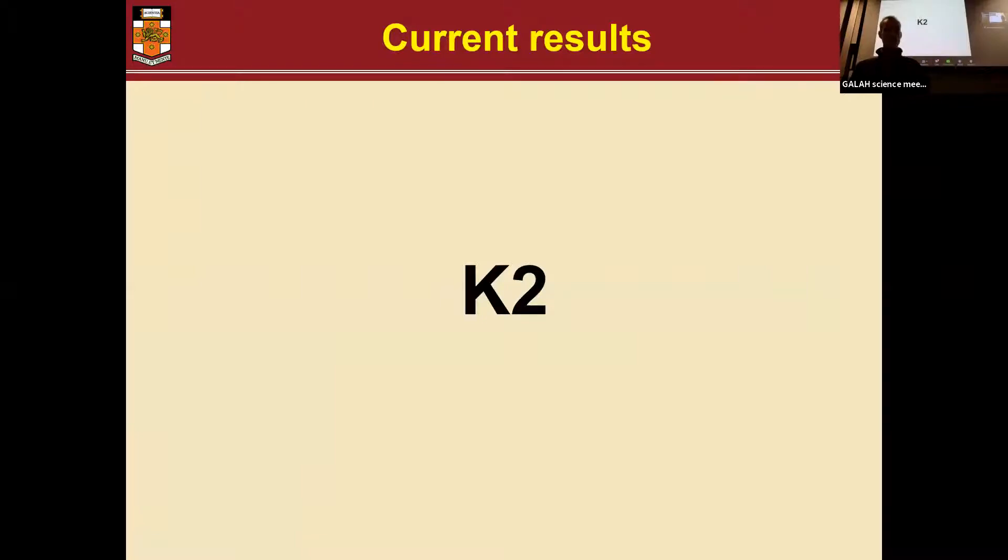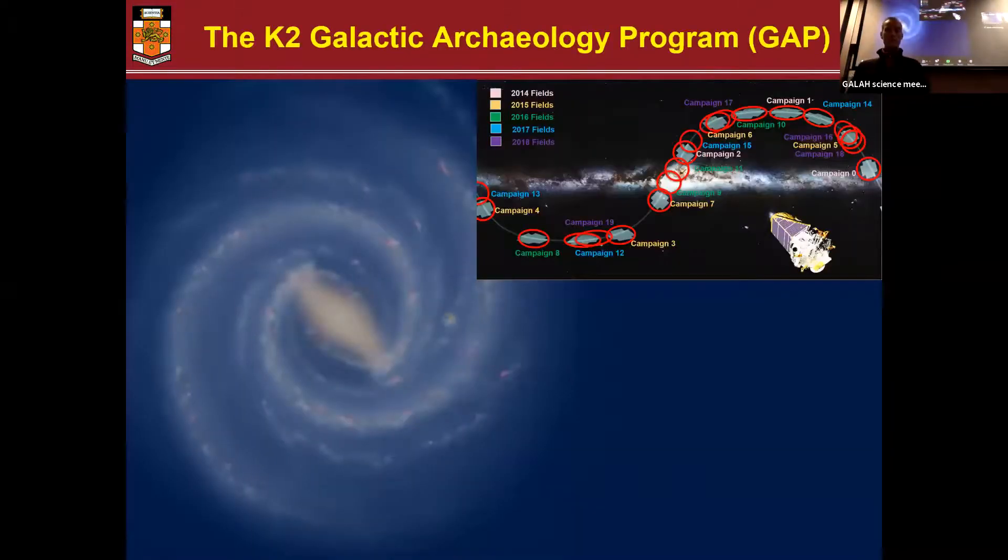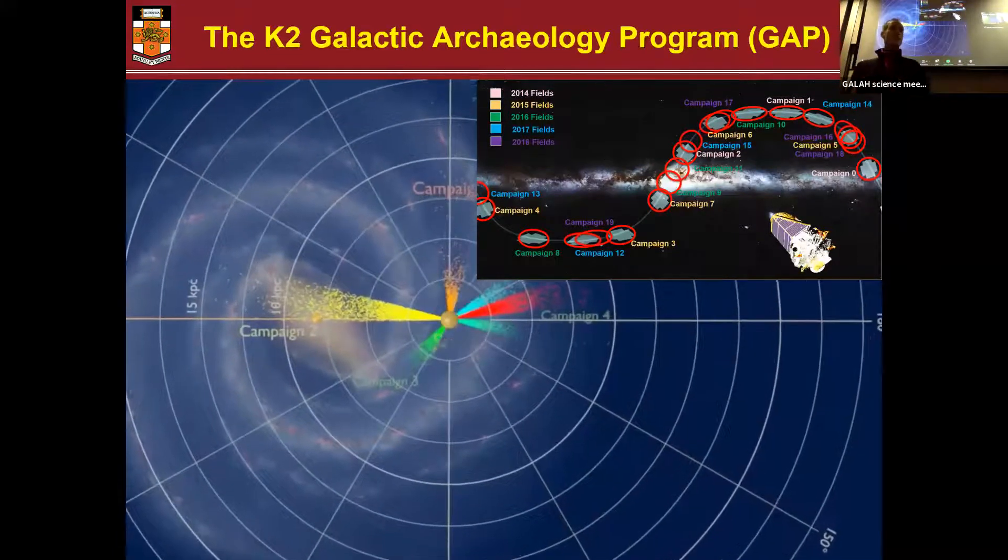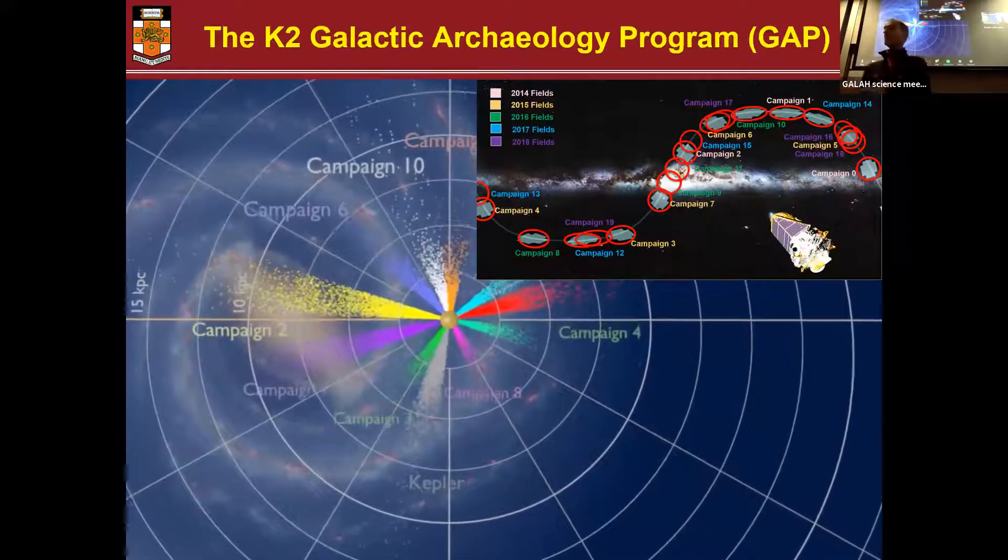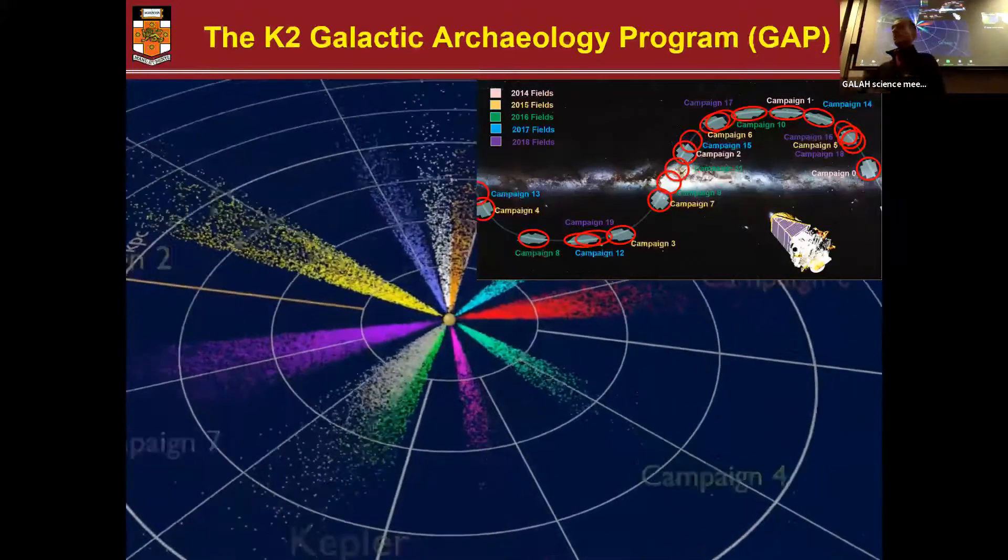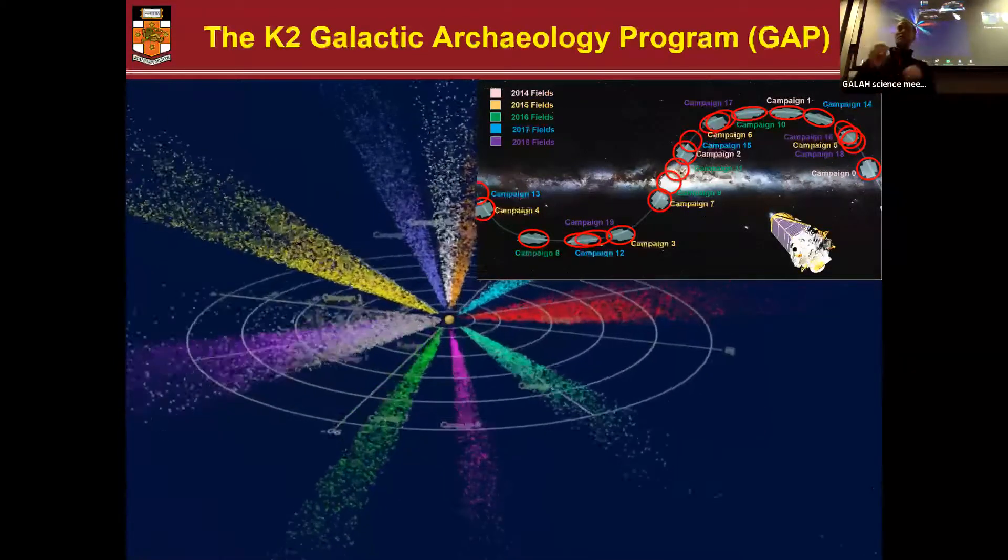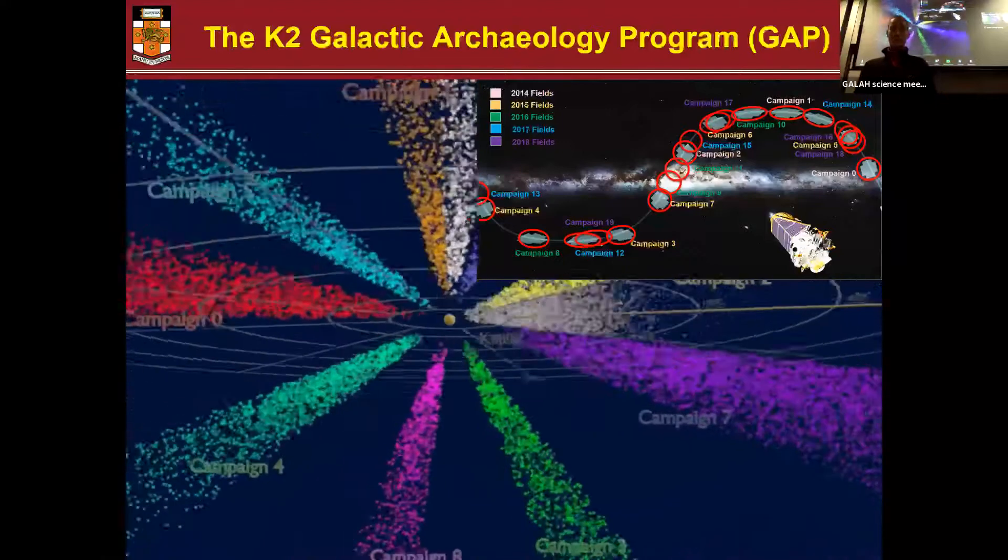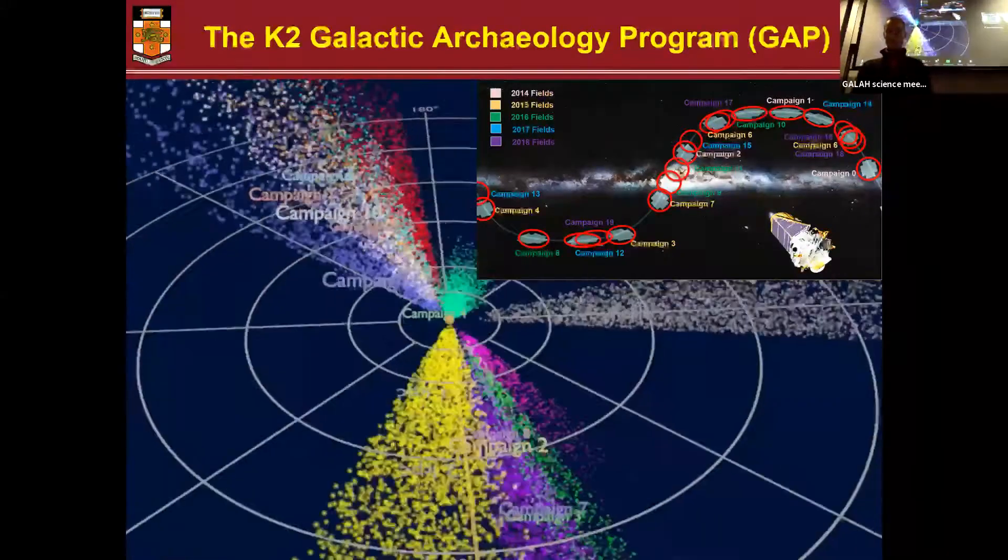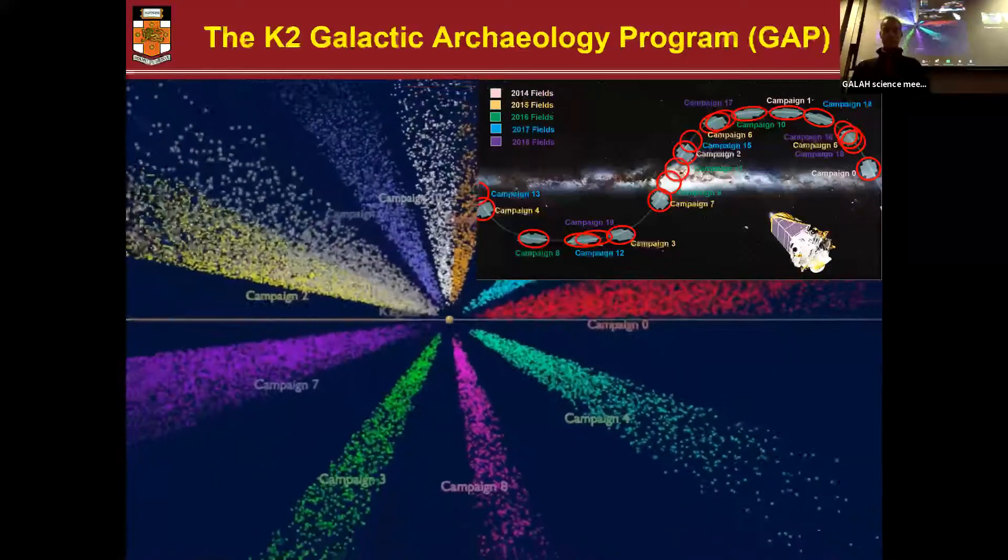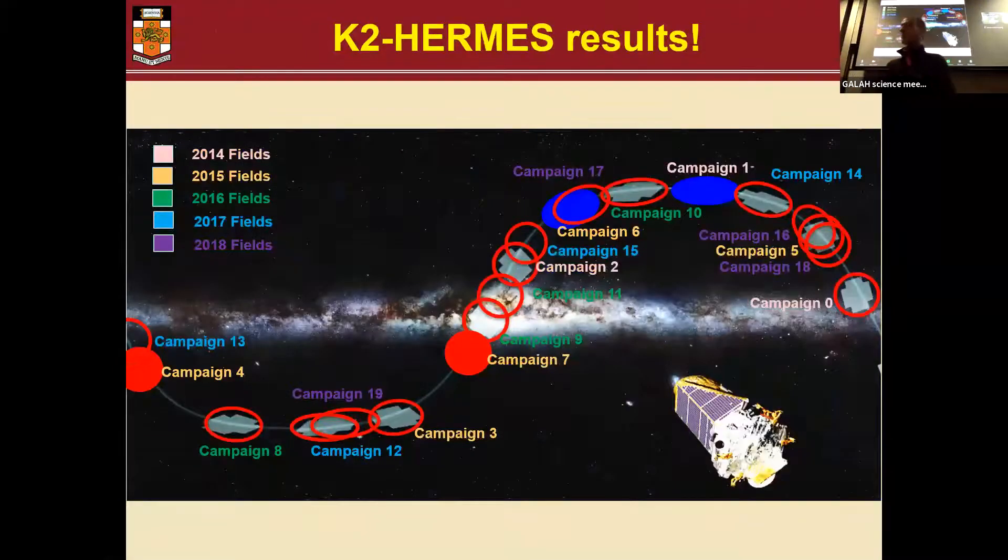K2 was the failed Kepler mission that became this new mission that looked along the ecliptic. And it gave us a beautiful opportunity to select stars with a very well-defined selection function that we could reproduce later on. Not only that, it enabled us to look at very different regions of the galaxy. So we could see whether the discrepancy we saw in the Kepler field would be the same or maybe even different in different directions of the galaxy.